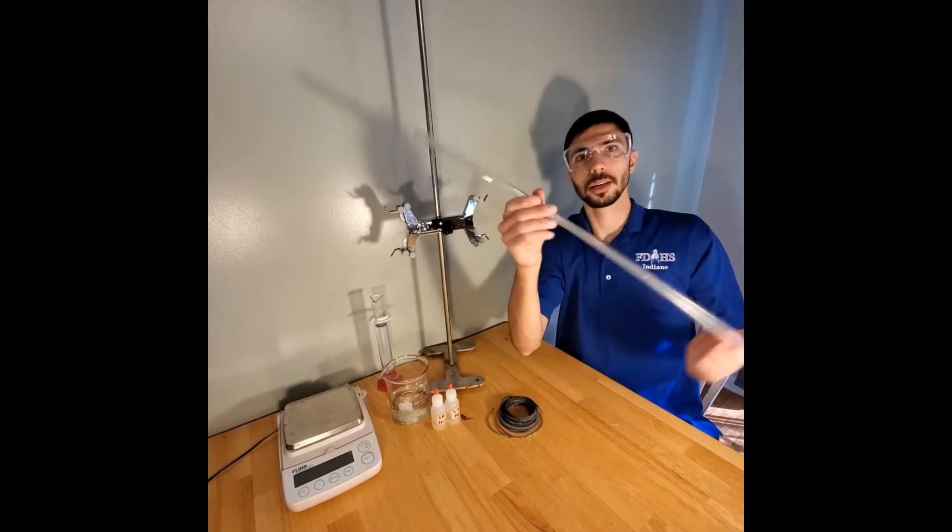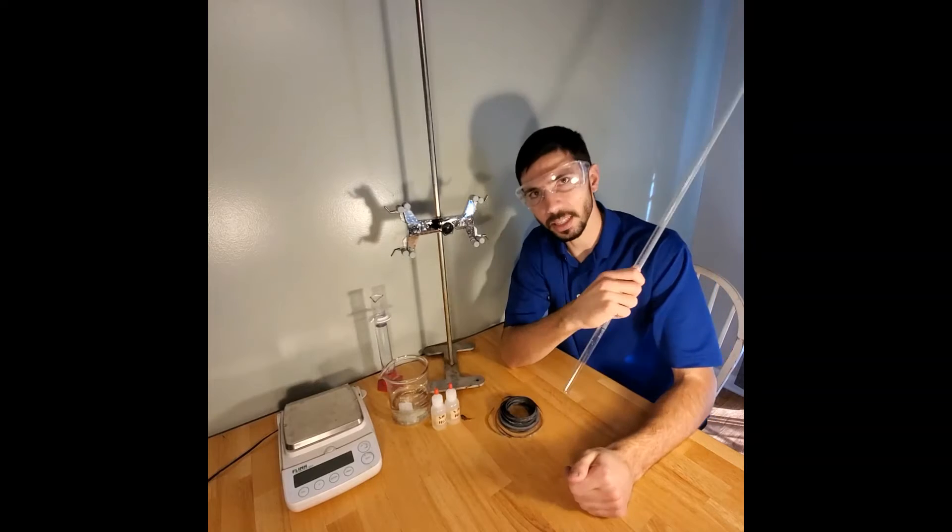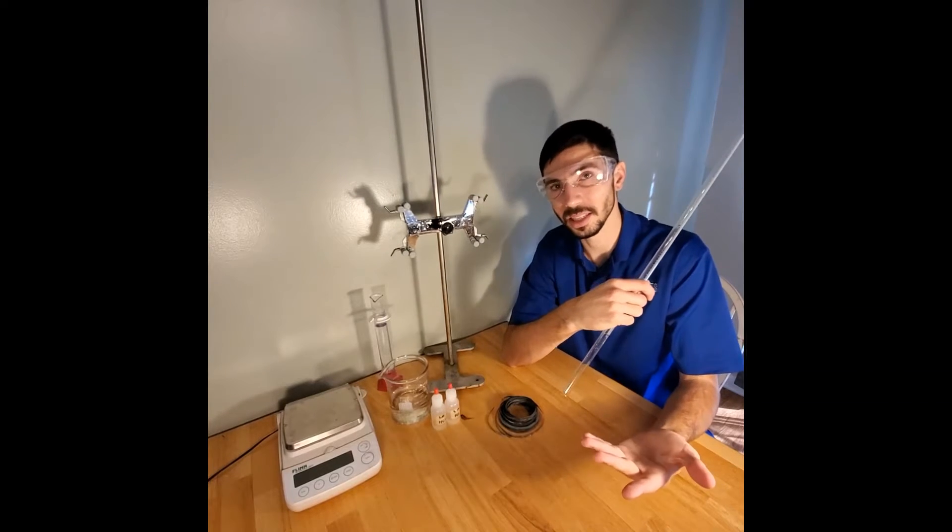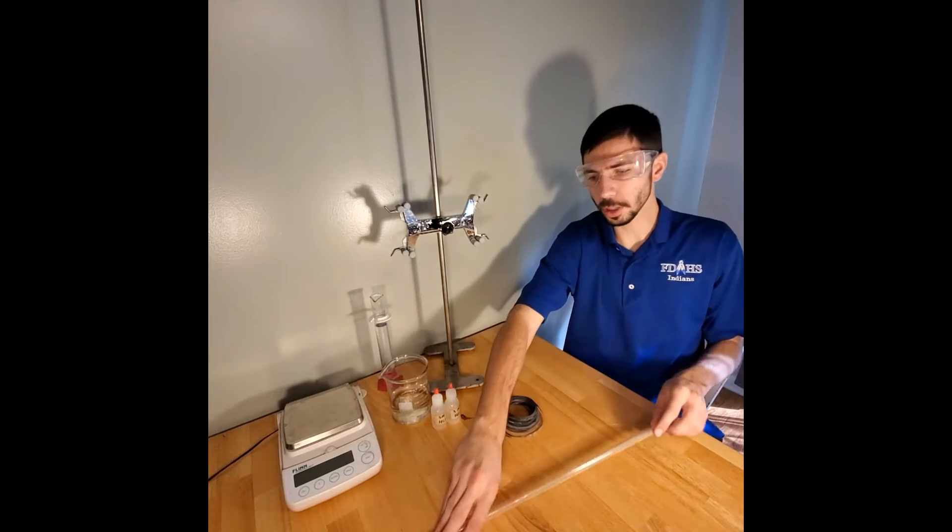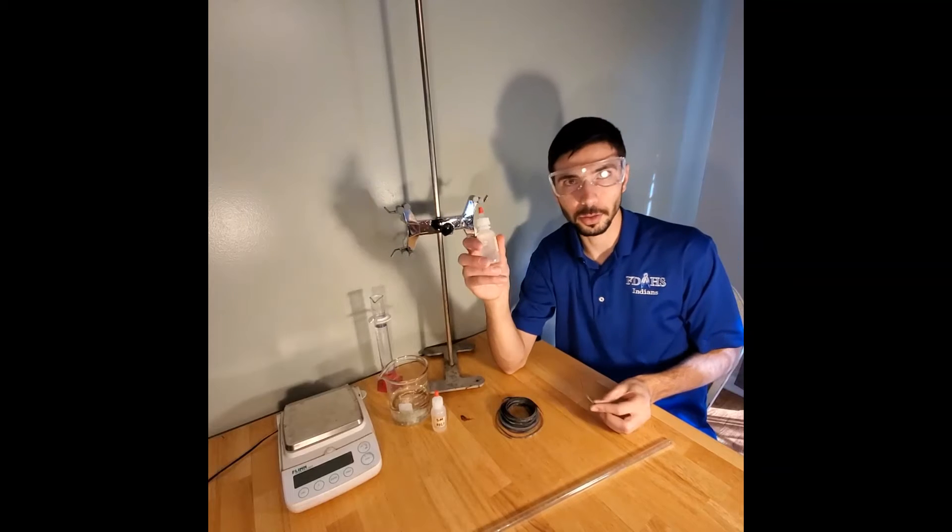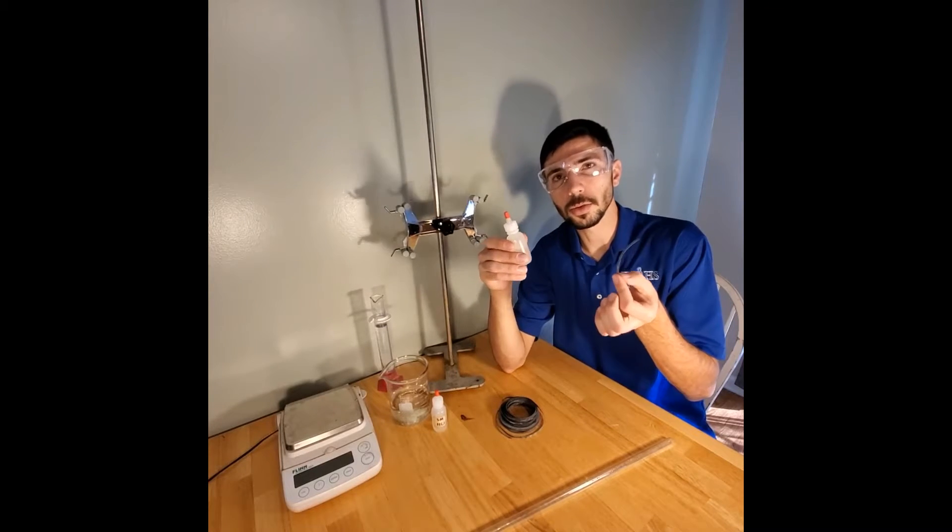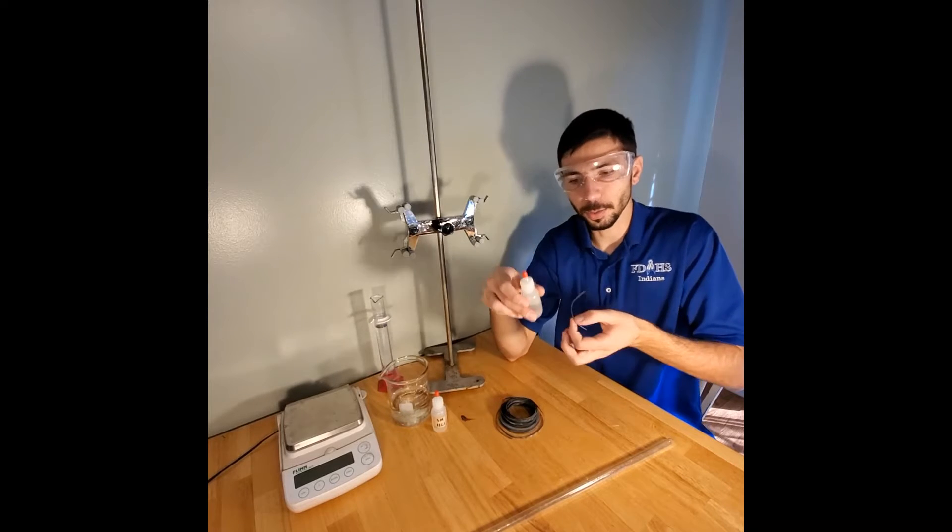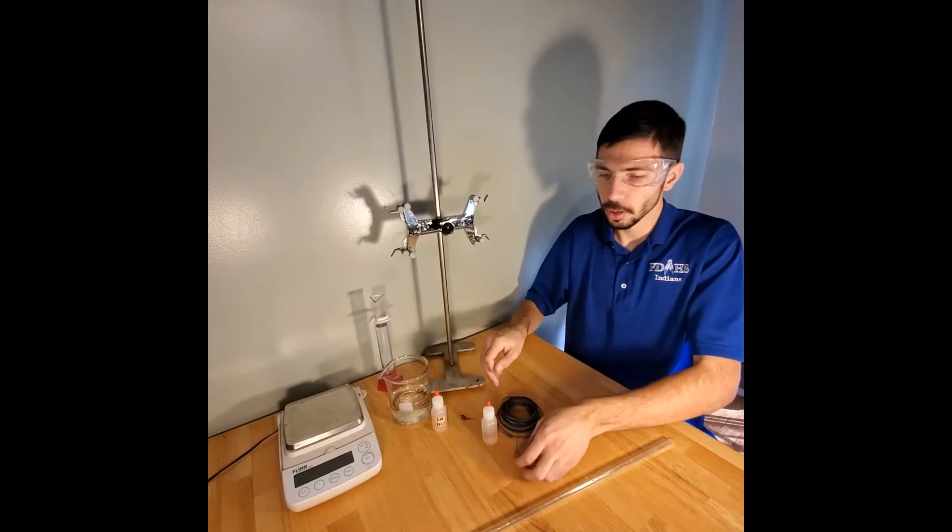So why do we have it upside down? Usually a test tube is like this, why is it like that? Well that's because gases are less dense than most substances so they have a tendency of floating. So what we're going to do is we are going to have a little bit of magnesium and we are going to have some hydrochloric acid, and when these things react it will produce a gas.